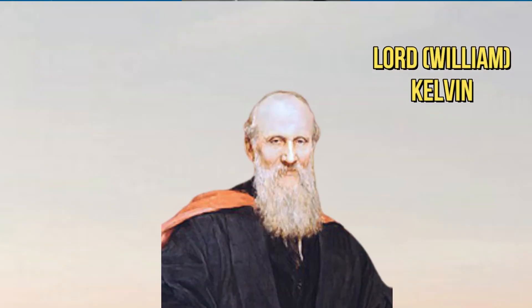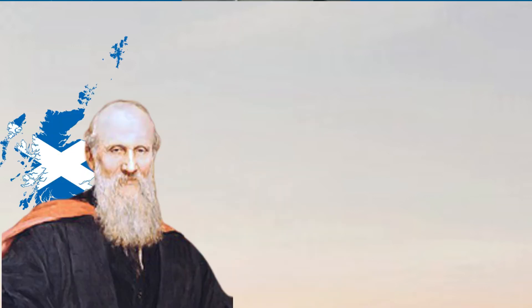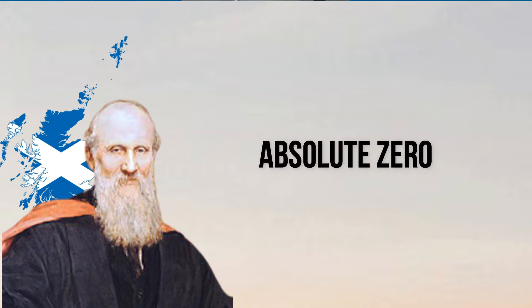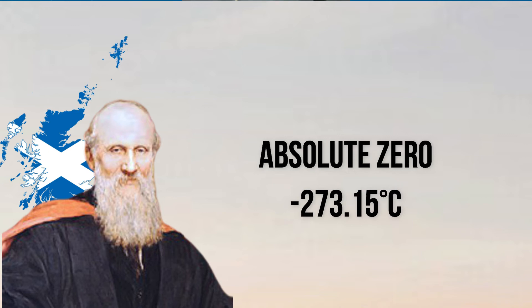Lord William Kelvin was a Scottish physicist who devised the Kelvin scale in 1854. The Kelvin scale is based on the idea of absolute zero, the theoretical temperature at which all molecular motion stops and no discernible energy can be detected. In theory, the zero point on the Kelvin scale is the lowest possible temperature that exists in the universe, which is -273.15 degrees Celsius.